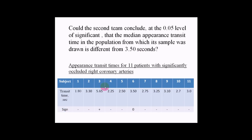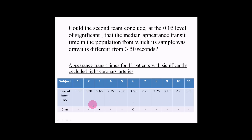Could the second team conclude at the 0.05 level of significance that the median appearance transit time in the population from which the sample was drawn is different from 3.50 seconds? These are the data for appearance transit time for 11 patients with significantly occluded right coronary artery. Remember: when the data are above the median value, we change the data to a plus sign; when the data are below the median value, we change the data to a minus sign. We must remove the data when the data is equal to the median value.